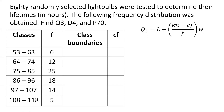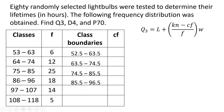The formula for finding quartile 3 is shown. In the formula, we need the class boundaries and the cumulative frequency. To find the class boundaries, we subtract 0.5 from the lower class limit and add 0.5 to the upper class limit. So that gives us 52.5 to 63.5, 63.5 to 74.5, 74.5 to 85.5, and 85.5 to 96.5.